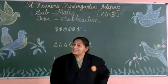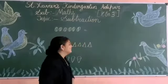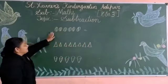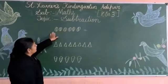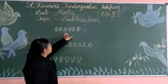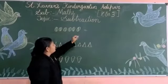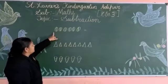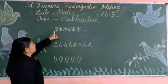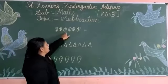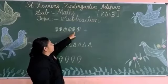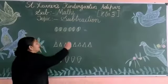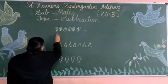So all of you look at the board. Look here. What is this? Ball. So how many balls are there? First we will count. 1, 2, 3, 4, 5, 6. How many balls are there? 6 balls.